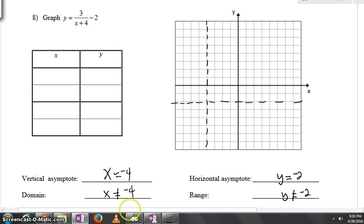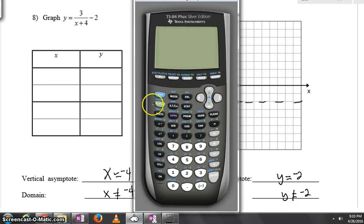At this point, all you need to do is get that calculator out and type in your fraction. You'll say alpha y equals, and you can get 3 all over x plus 4. And then move your space over, hit minus 2.